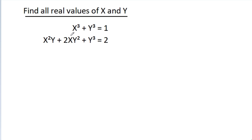In this video, we have given that x cubed plus y cubed is equal to 1, and x squared y plus 2xy squared plus y cubed is equal to 2. We have to find all real values of x and y.